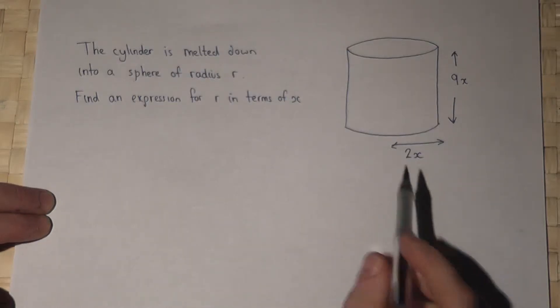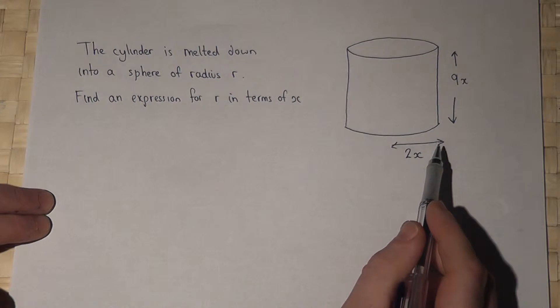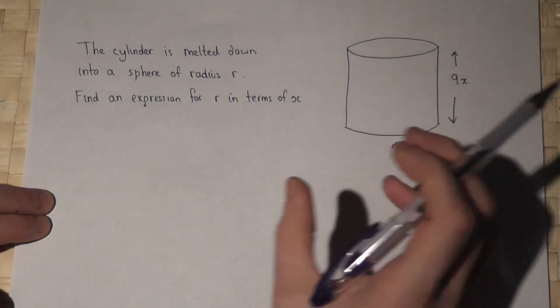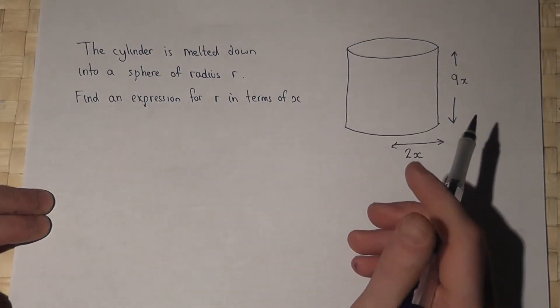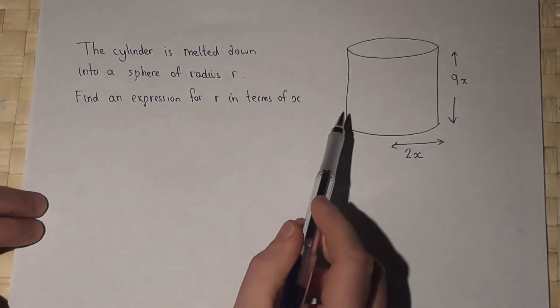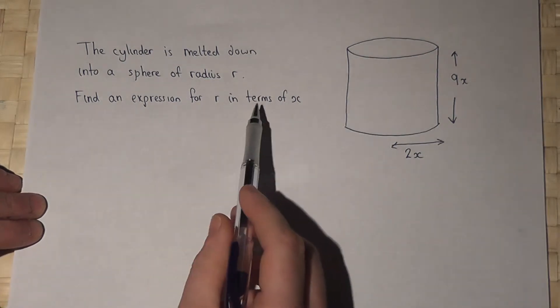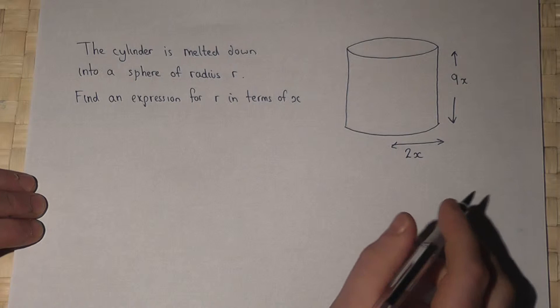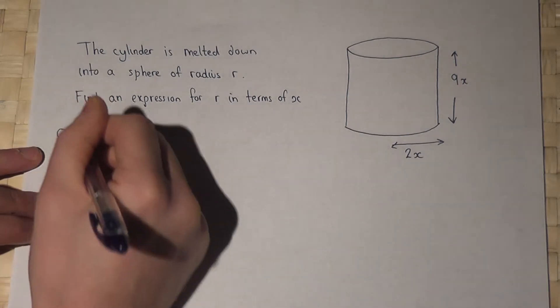In this problem we've got a cylinder which is melted down to make a sphere which has a radius of r and we're asked to find an expression for r in terms of x. Now then step one, I can